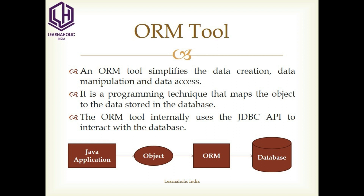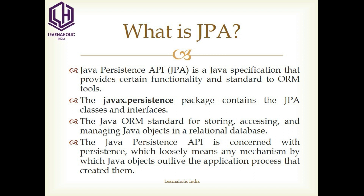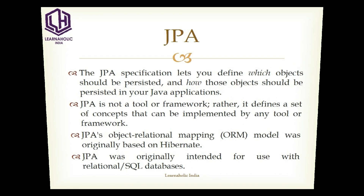Let's see what is Java Persistence API. Java Persistence API, or JPA, is a Java specification that provides certain functionality and standard to ORM tools. The javax.persistence package contains the JPA classes and interfaces. It is the Java ORM standard for storing, accessing, and managing Java objects in a relational database.